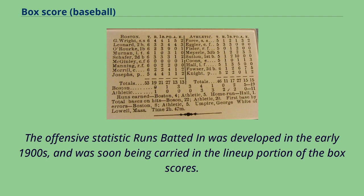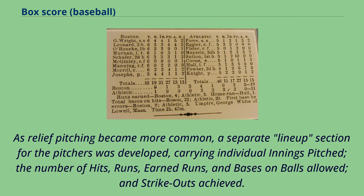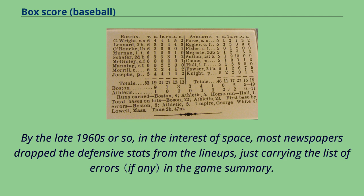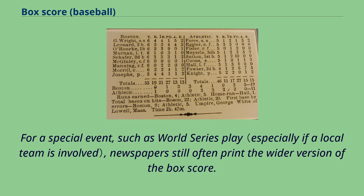The offensive statistic runs batted in was developed in the early 1900s, and was soon being carried in the lineup portion of the box scores. As relief pitching became more common, a separate lineup section for the pitchers was developed, carrying individual innings pitched, the number of hits, runs, earned runs, bases on balls allowed, and strikeouts achieved. By the late 1960s, most newspapers dropped the defensive stats from the lineups, just carrying the list of errors in the game summary. For special events such as World Series play, newspapers still often print the wider version of the box score.